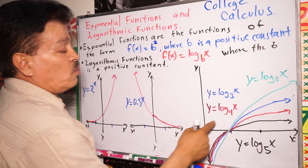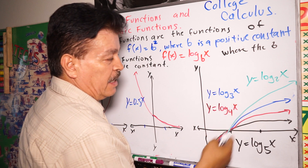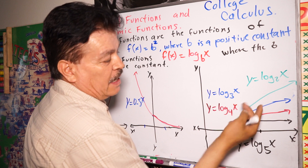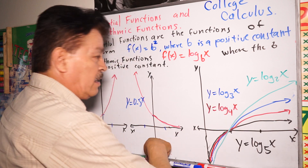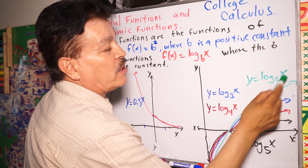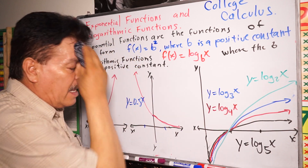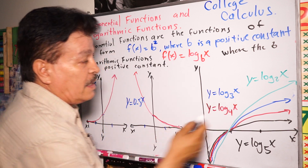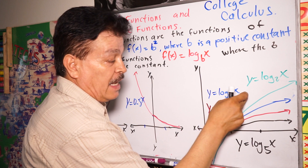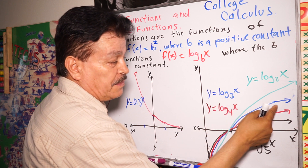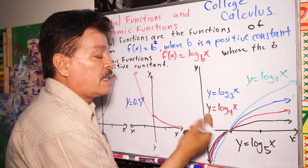Let's go to graphs three and four — we have four graphs total. I'm trying to show you what a logarithmic function looks like. Look at the green color: the green graph is a little bit up. The green one is y equals log base 2 of x. The blue one is a little bit lower — it's y equals log base 3 of x.